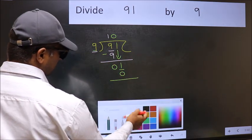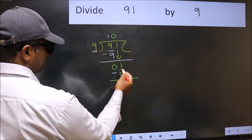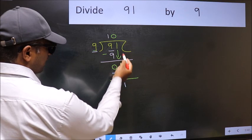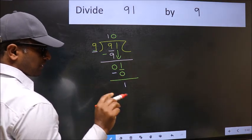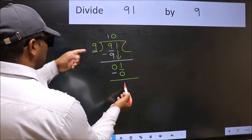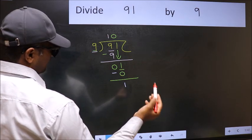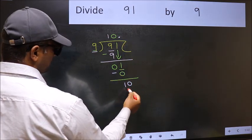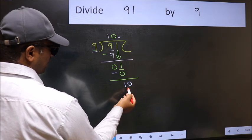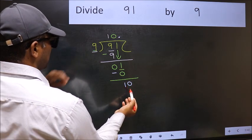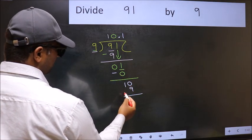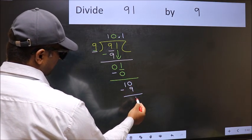Now you should subtract: 1 minus 0, 1. Over here, we did not bring any number down and 1 is smaller than 9. So now you can put dot and take 0. So 10. A number close to 10 in 9 table is 9 once 9. Now you should subtract. You get 1.